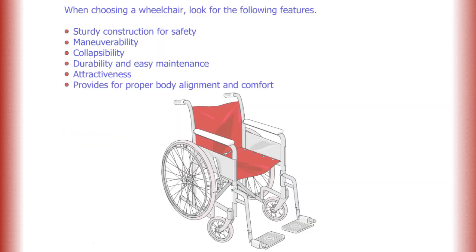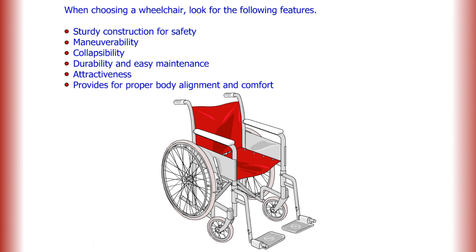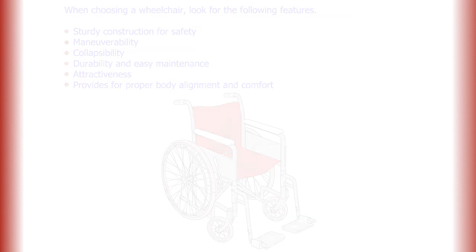When choosing a wheelchair, look for the following features: sturdy construction for safety, maneuverability, collapsibility, durability, easy maintenance, and attractiveness. Make sure it provides for proper body alignment and comfort.